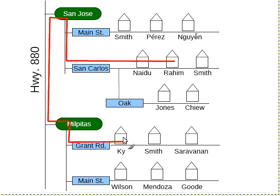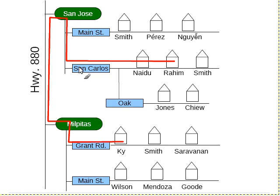If we wanted to go back, we'd go in the reverse direction. From Grant Road, we take the Milpitas Connector, from Milpitas to Highway 880, from Highway 880 to San Jose. From San Jose, we can get to San Carlos Street, and on San Carlos Street is the Raheem house.